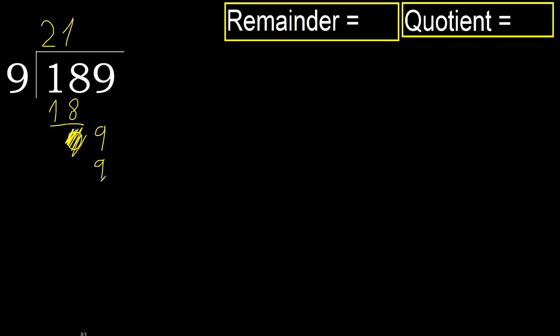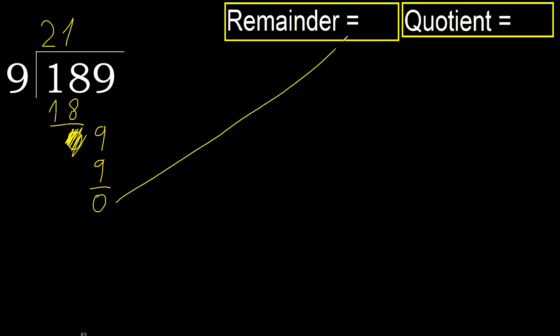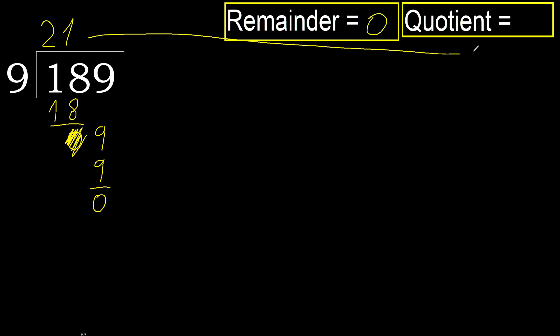9 multiplied by 1 is 9, is not greater. Ok, 9 minus 9 is 0. Next, there is no number, therefore finish it. 189 divided by 9 is 21.